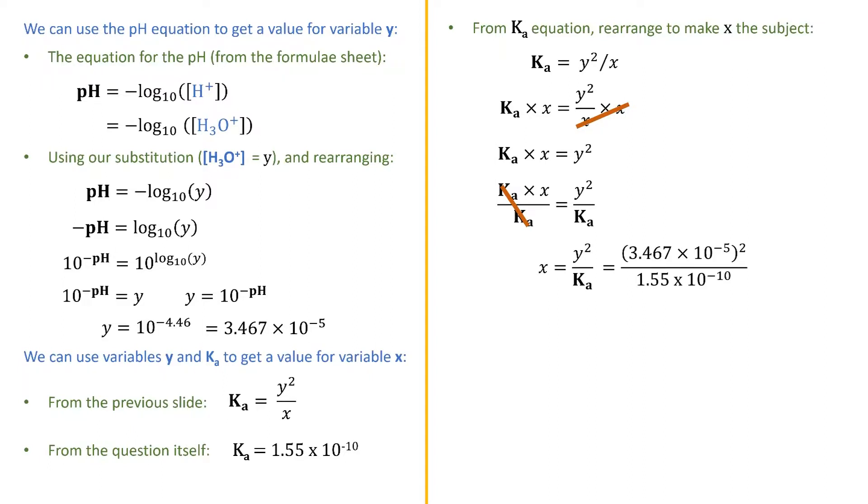Specifically, 3.467 times 10 to the negative 5 squared, divided by 1.55 times 10 to the negative 10, which after plugging into the calculator gives 7.7565. We've kept a few more decimal places than needed here.